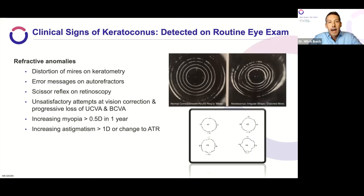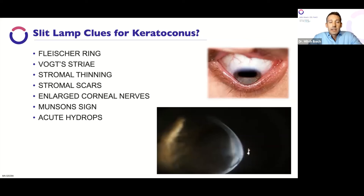The third tool is the phoropter. Things need to add up: if you're seeing a one-diopter increase in astigmatism in one year, a half-diopter increase in myopia, or a patient who isn't correctable to 20/20 who was previously, this patient really needs a topographic scan. A good clinical exam at the slit lamp is so important. We're looking for things like a Fleischer's ring, Vogt's striae — small cracks in the cornea — stromal thinning, stromal scars, enlarged corneal nerves, and Munson sign, where a patient looks down and the lower eyelid pouches out — one of the hallmark signs of keratoconus.